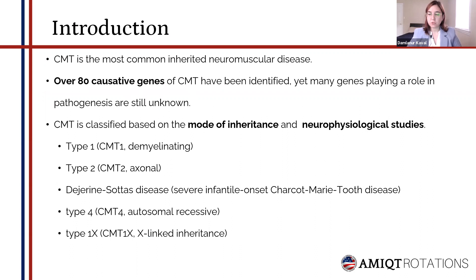CMT is the most common inherited neuromuscular disease. It is the umbrella term for different types of inherited neuromuscular disorders. There are over 80 causative genes and more than 600 mutations responsible for CMT, but we still don't know many genes playing a role in the pathogenesis of the disease. It is broadly classified based on the mode of inheritance and neurophysiological studies.